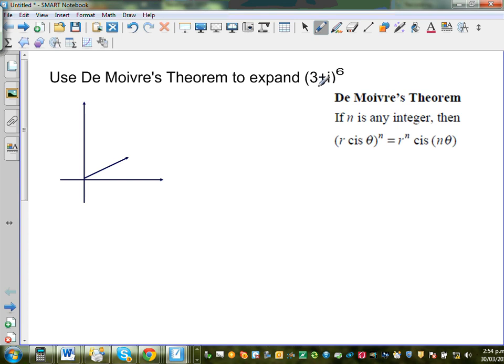So here, the first thing that we need to do is we need to change this, which is in a plus bi form, to a polar form. So I've drawn this is the real arm and this is the imaginary arm. So say this is 3, not drawn to scale, and this is i.